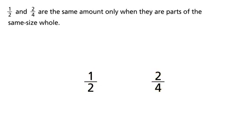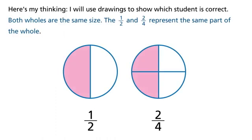One-half and two-fourths are the same amount only when they are parts of the same size whole. Here's my thinking. I will use drawings to show which student is correct. Both wholes are the same size. The one-half and two-fourths represent the same part of the whole.